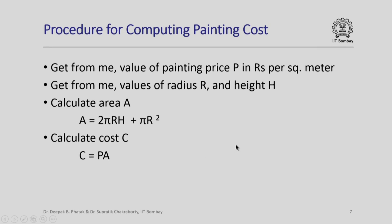Did you have any difficulty in understanding this? Observe that we have deviated slightly in the symbols used — we used small r for radius in the previous slide, but here we are using capital R. You understand it easily because for you it does not make a difference whether r is small or capital; it still means a radius. However, when we write computer programs we have to be very careful because each name has to be unique and must be used exactly the same way throughout to mean the same thing.